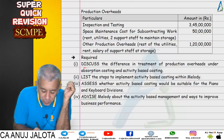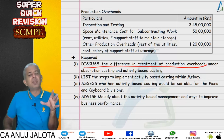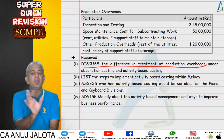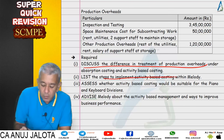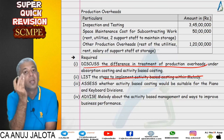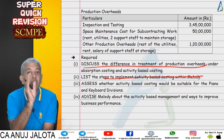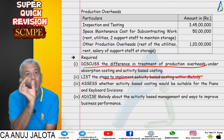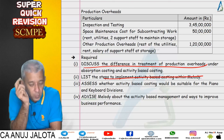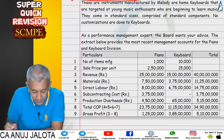Part one of question 26 asks you to discuss the difference in treatment of production overheads under absorption costing and activity based costing — how each method works, what methods are used under each. Then you discuss how to implement ABC: identify all activities, find cost drivers, calculate cost driver rates, and apply them to products. Each piano will be a different product, so you'll get a separate cost for each one.